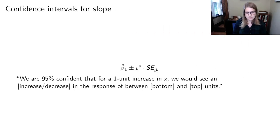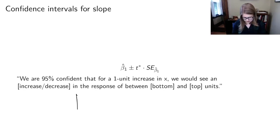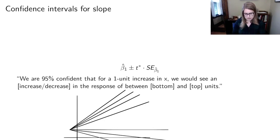Last week we talked about doing a confidence interval for a slope. We had beta_1_hat as our statistic, a T* value depending on the distribution, and the standard error of the slope. We'd say we're 95% confident that for a one-unit increase in X, we would see an increase or decrease in the response of between the bottom and top of the interval units. If an interval had both negative and positive slopes, we wouldn't be very confident about the slope. But if we just had a few positive slopes, we'd be pretty confident it's a positive slope within that range.